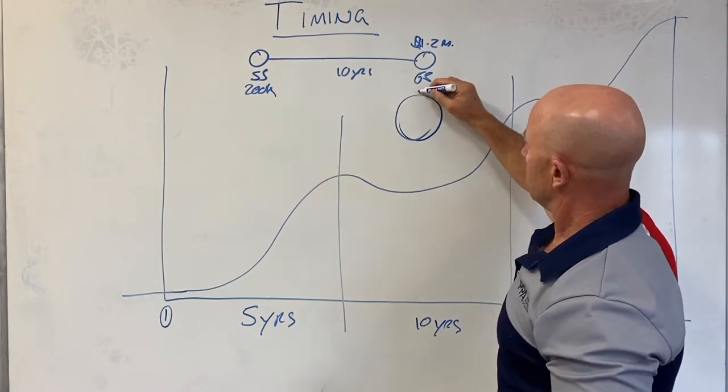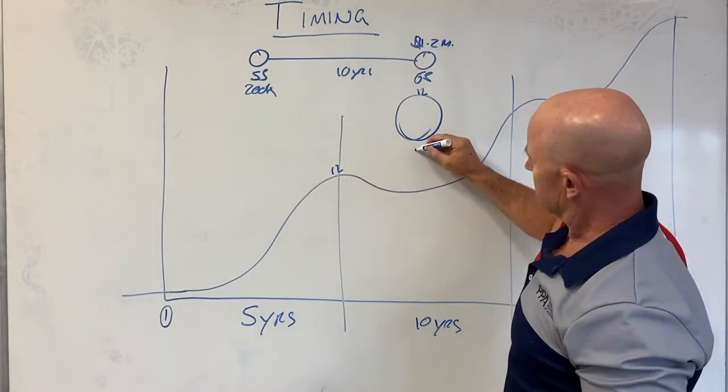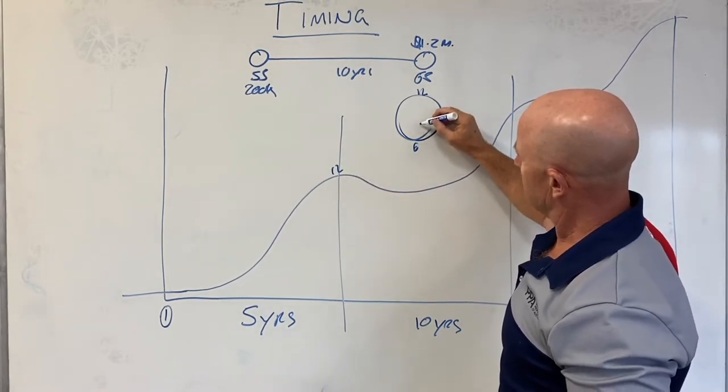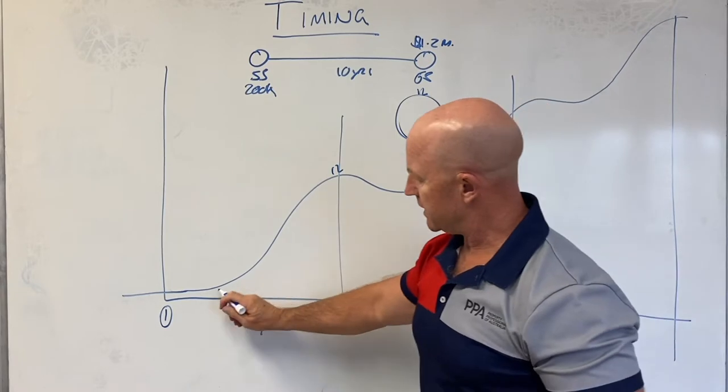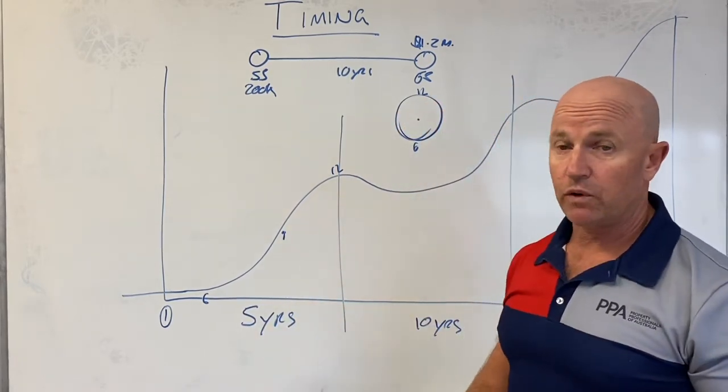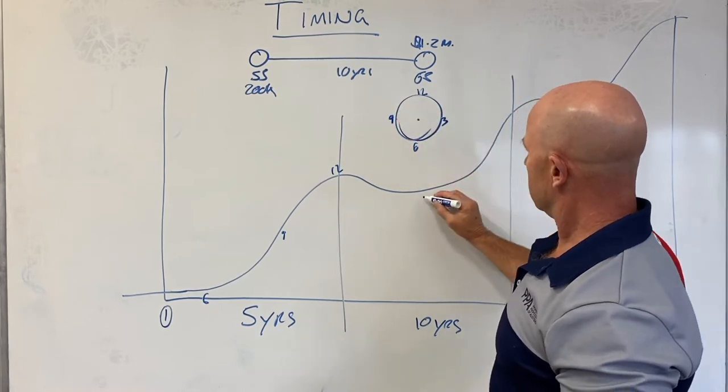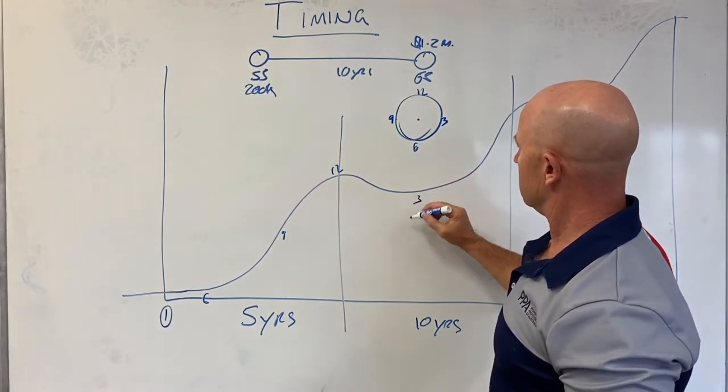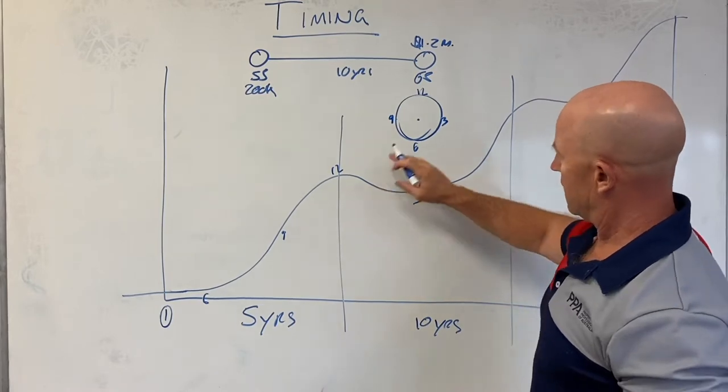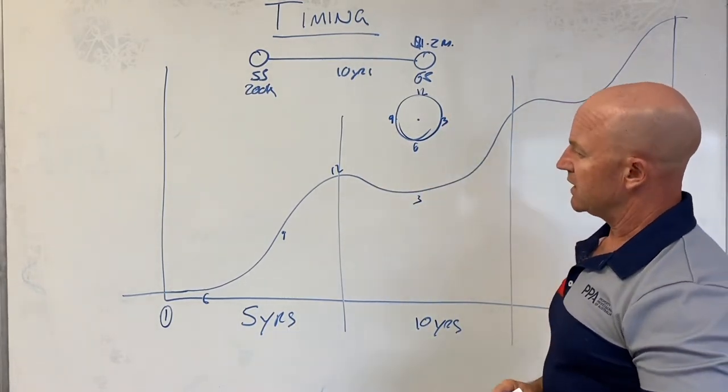A property cycle—if I draw a property clock for you—12 o'clock is the top of the cycle, and 6 o'clock is the bottom of the cycle down here. 9 o'clock is about halfway up the cycle, and 3 o'clock is halfway down the correcting side of the cycle.